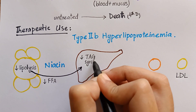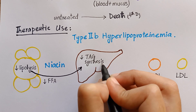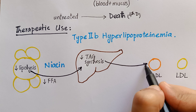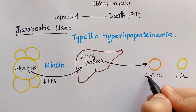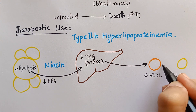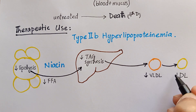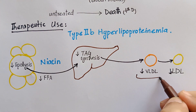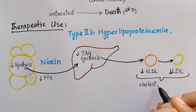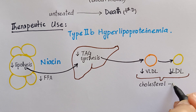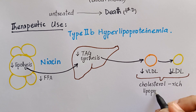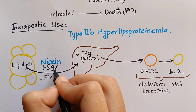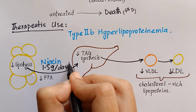Thus, niacin causes a decrease in liver triacylglycerol, which is required for VLDL production. LDL is derived from VLDL in plasma. Both of these cholesterol-rich lipoproteins are reduced in concentration when niacin is given at a dose of 1.5 grams per day.